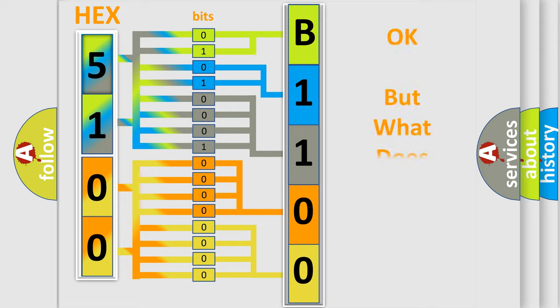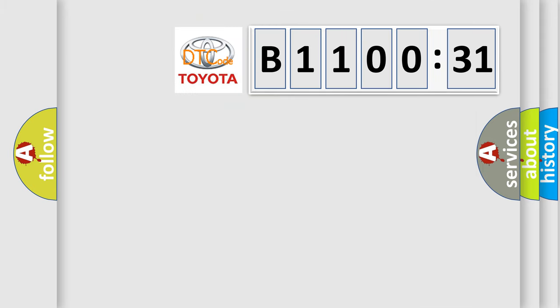The number itself does not make sense to us if we cannot assign information about what it actually expresses. So, what does the diagnostic trouble code B110031 interpret specifically for Toyota car manufacturers?